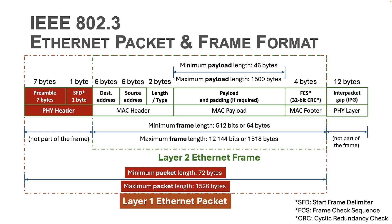In the following we are going to analyze the Ethernet packet format field by field. And more specifically, today we will focus on the layer 1 fields — the preamble and the start frame delimiter or SFD fields.